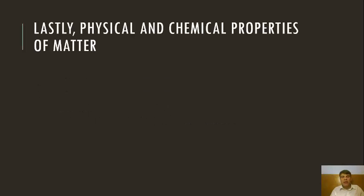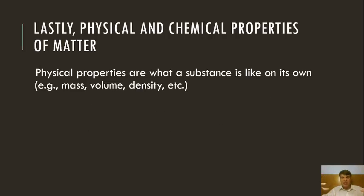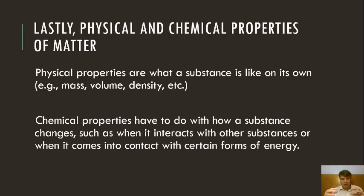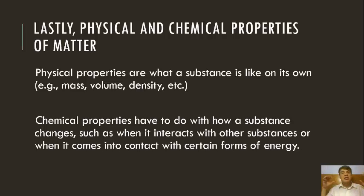What are physical and chemical properties? Physical properties are basically what a substance is like on its own — its mass, its volume, its density, etc. Chemical properties have to do with how substances change as they interact with other substances or with energy. Physical properties are how something is intrinsically or on its own terms. Those are some of the basic properties of matter.